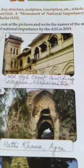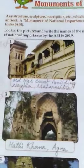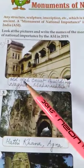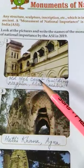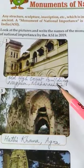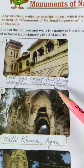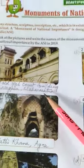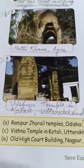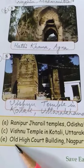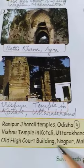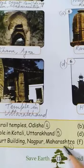Now the first one — you can see the picture of the monument given. The answer will be Old High Court Building, Nagpur, Maharashtra. Just in the clue box you can see the spelling given over here: Old High Court Building, Nagpur, Maharashtra.